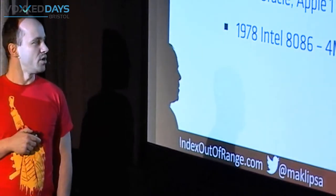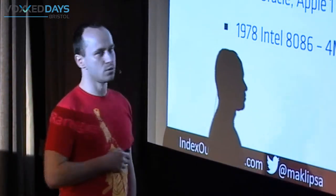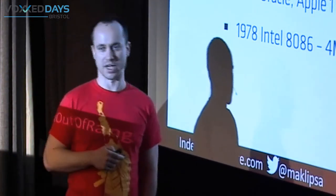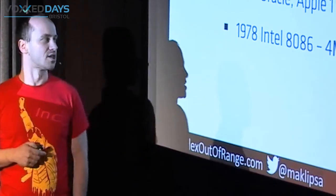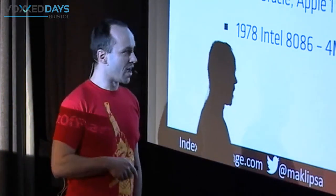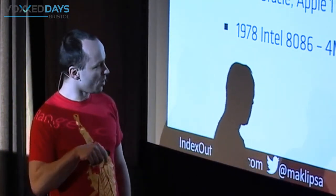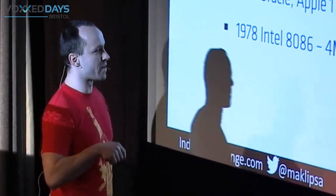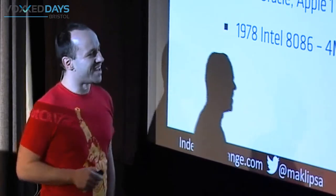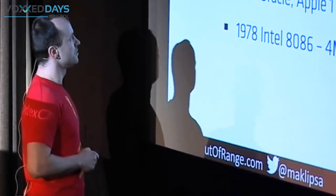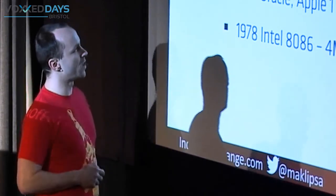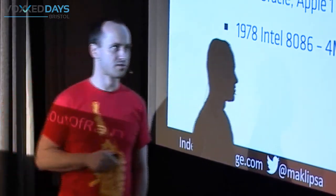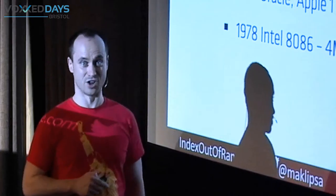We then had the granddaddy of all chips in almost any PC — the Intel 8086 — going to almost 10 megahertz. So as you can see, in seven years we went from 800 kilohertz to 10 megahertz, almost a 15-times improvement. That's a lot.